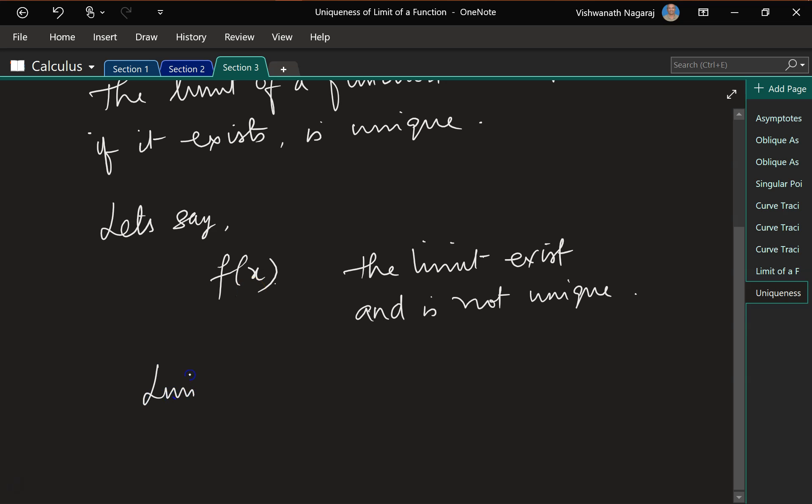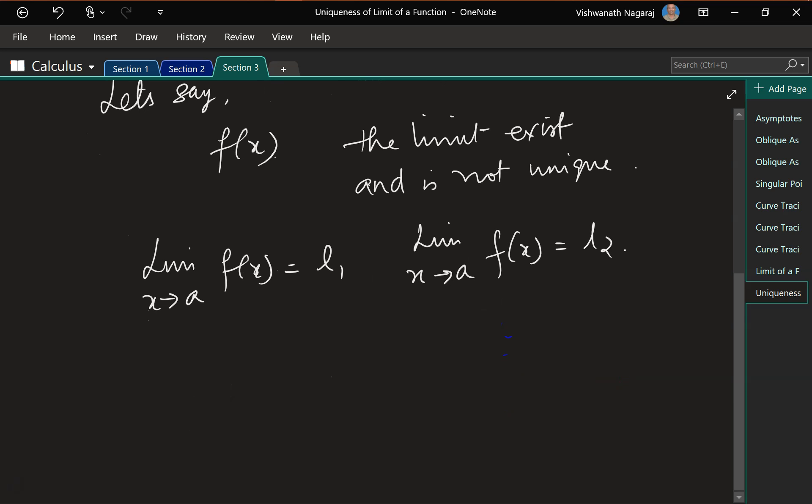So this we can write as limit as x approaches a of f of x is equal to l1, and because we have said it is not unique, let's say it has two limits, so l1 and l2, which means l1 is not equal to l2.